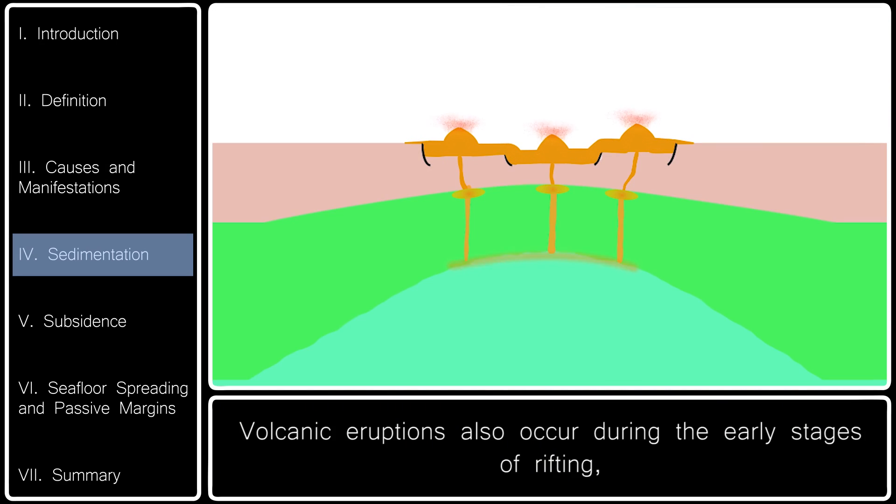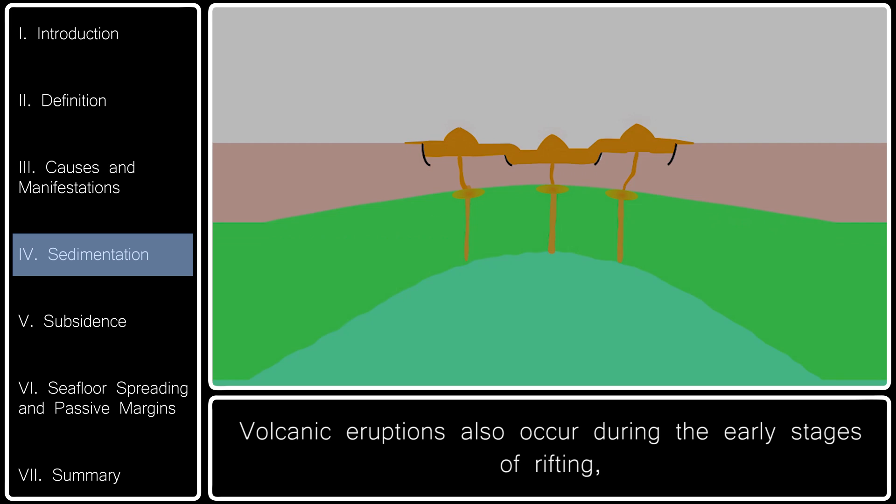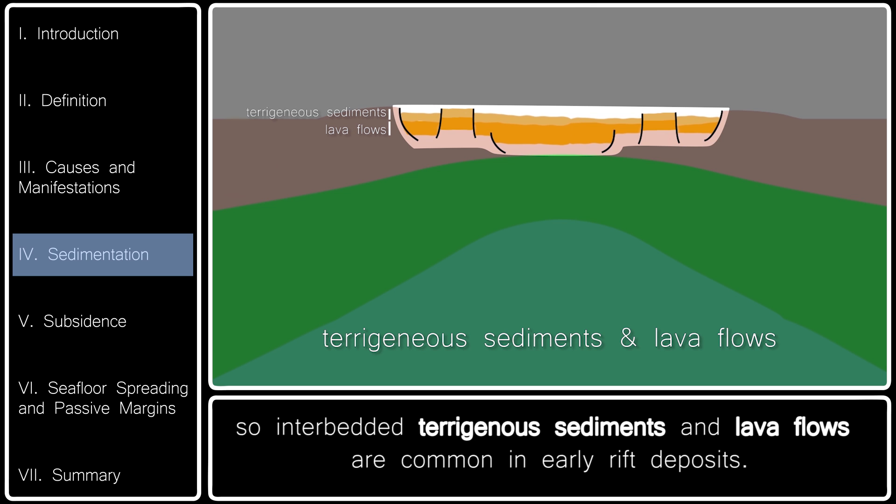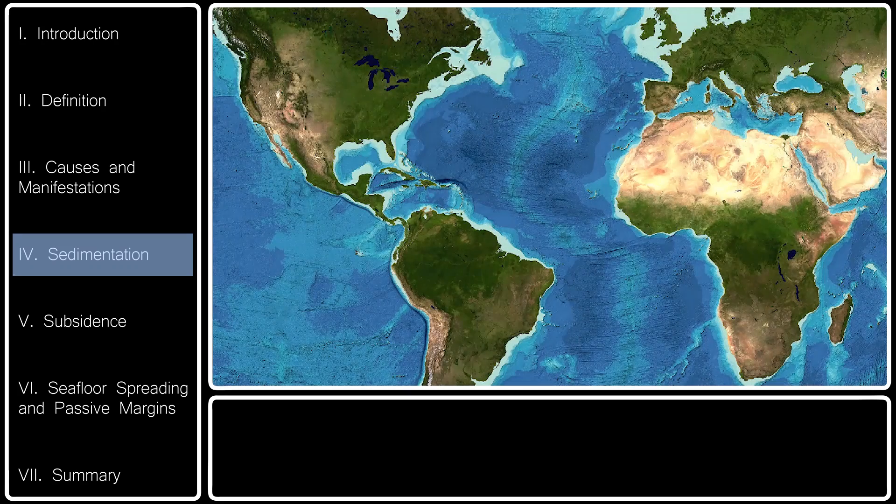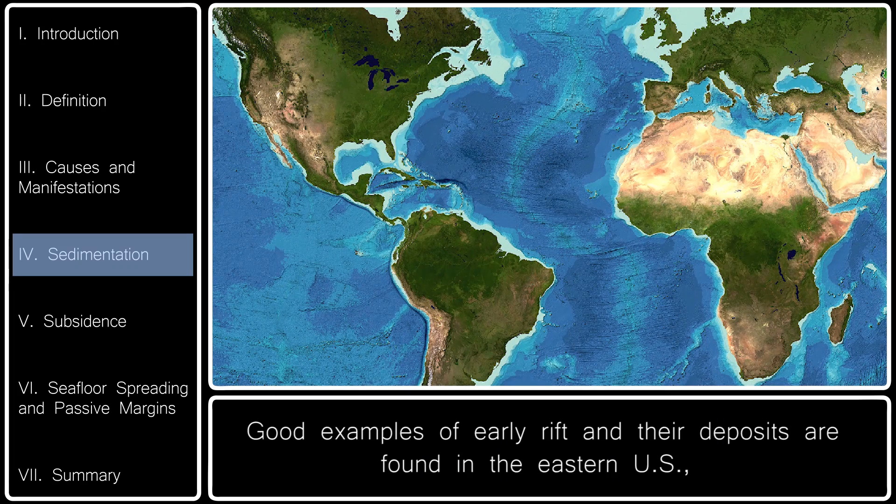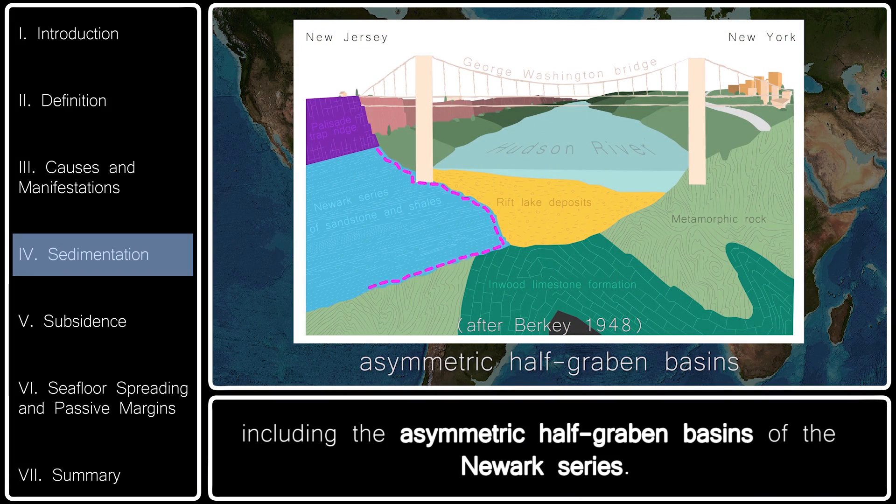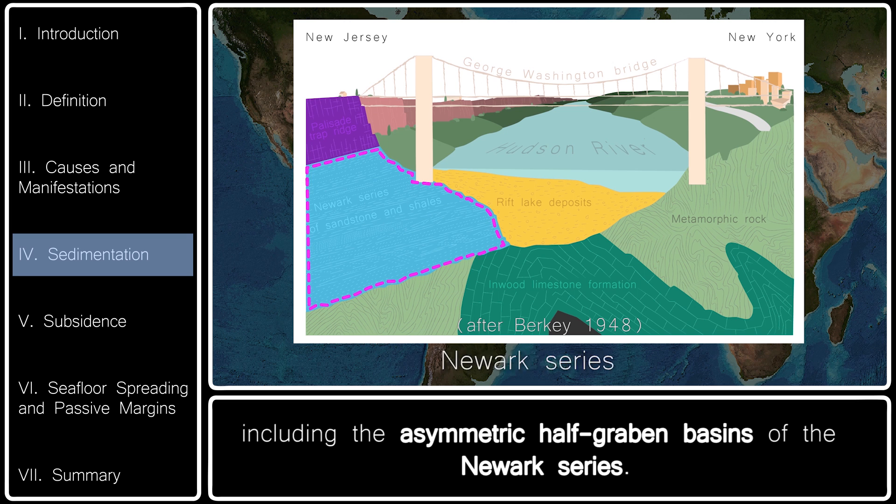Volcanic eruptions also occur during the early stages of rifting, so interbedded terrigenous sediments and lava flows are common in early rift deposits. Good examples of early rifting deposits are found in the eastern U.S., including the asymmetric half-graben basins of the Newark series.